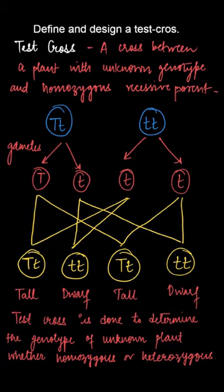Capital T small t, small t small t, capital T small t, small t small t. The respective phenotypes will be tall, dwarf, tall and dwarf.